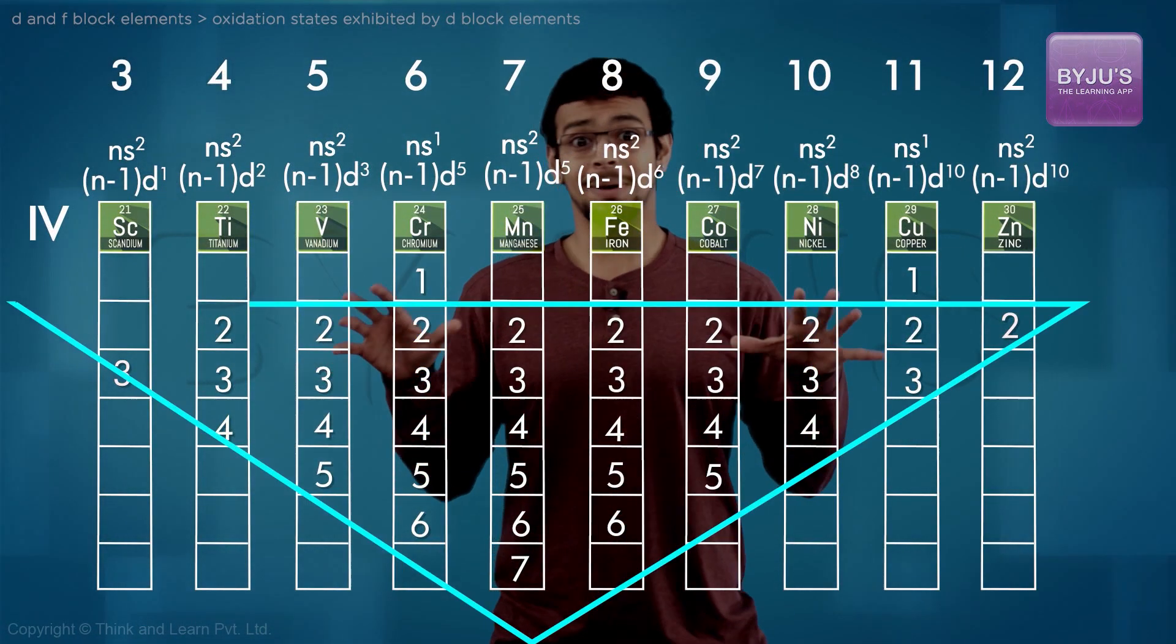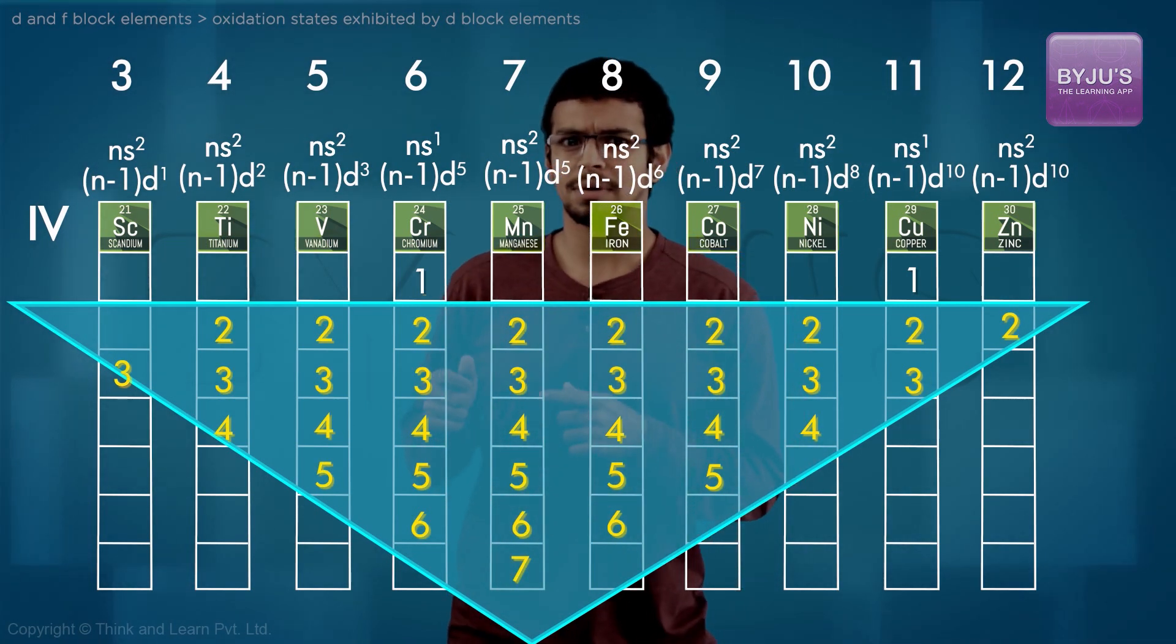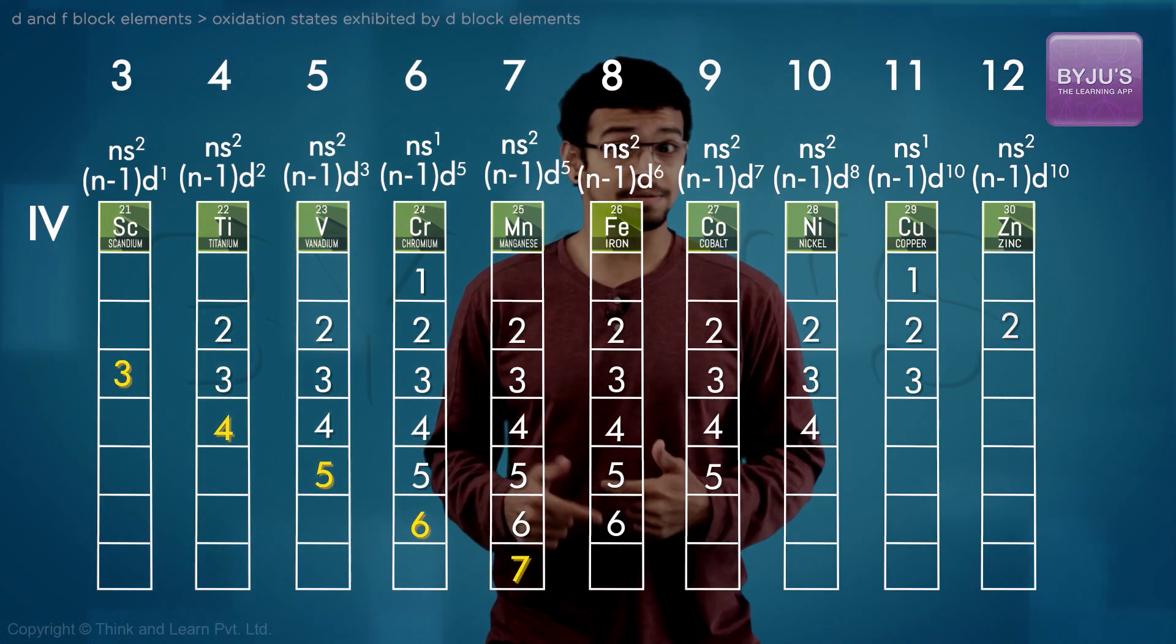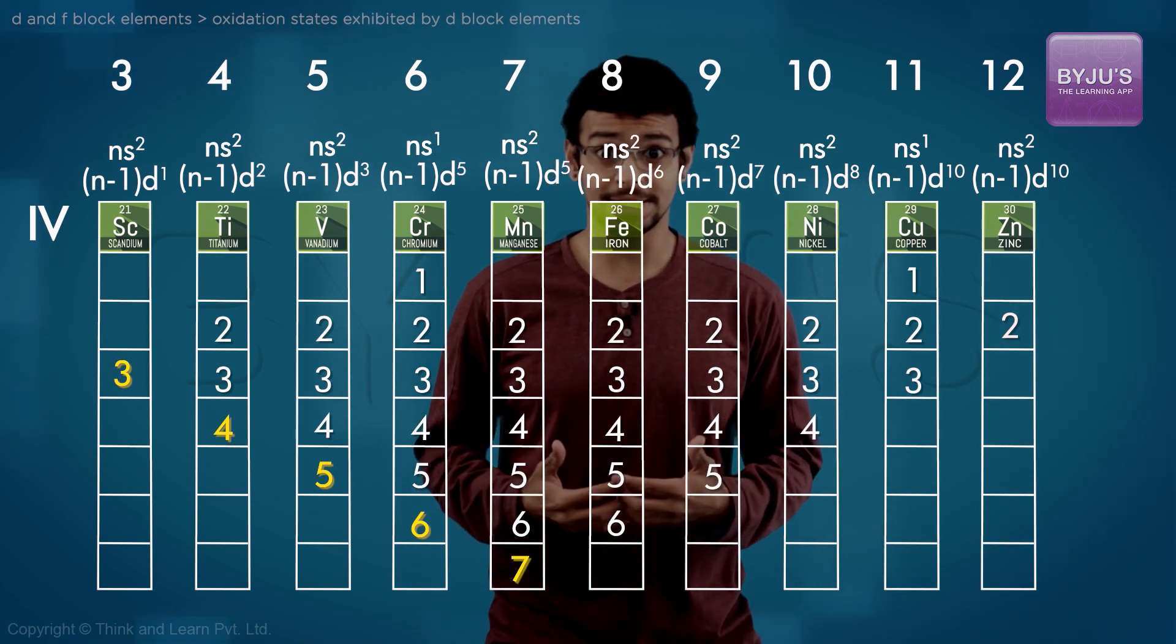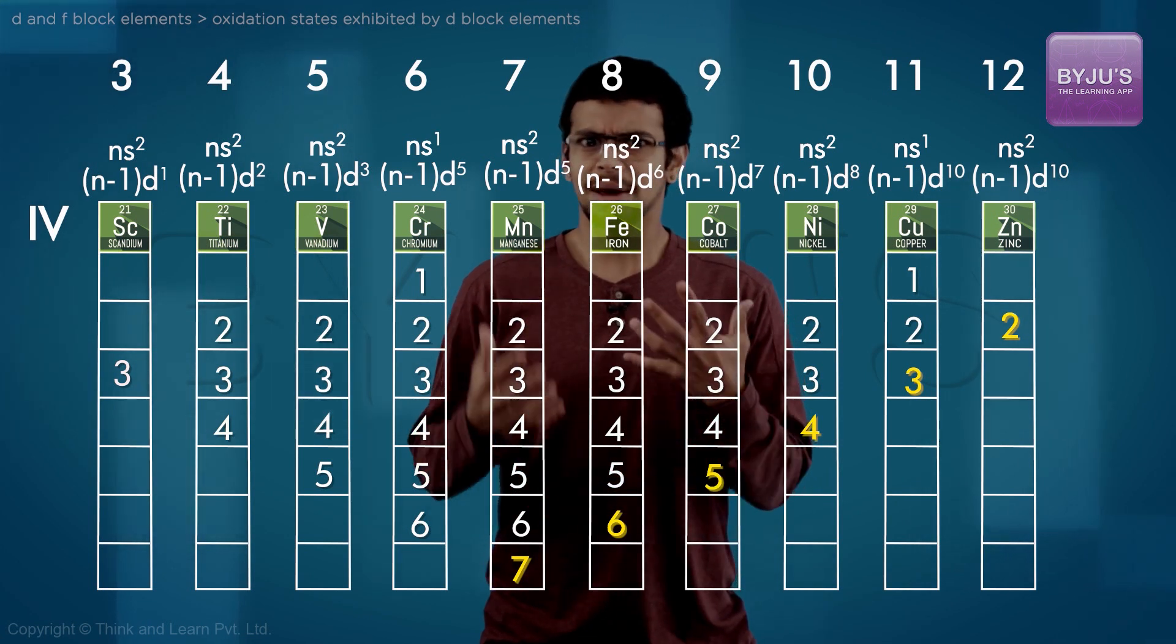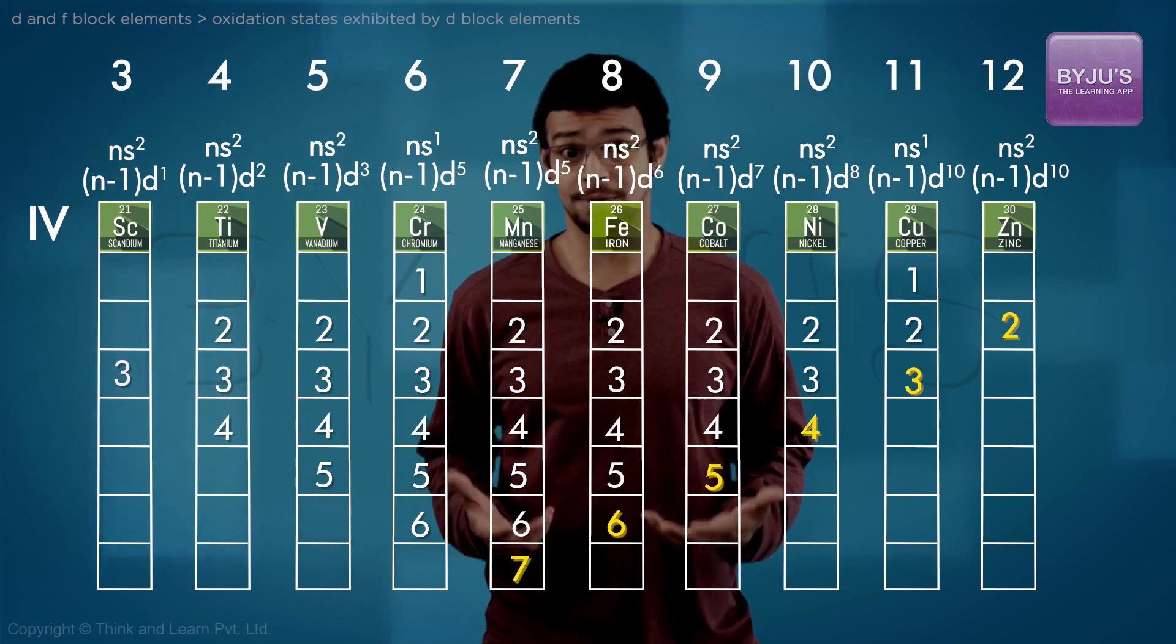As a trend, you will notice a beautiful pyramid of the number of oxidation states shown by the transition elements. From left to right in a series, it increases for the first 5 elements as the number of unpaired n-1 d electrons increase, and this decreases after the first 5 because the n-1 d electrons start pairing up and fewer electrons are available for bonding.